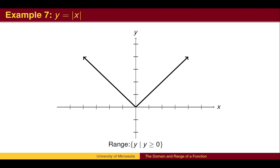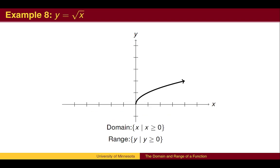Here is another example, the absolute value function. Once again, the graph points upward from the origin, so the range is all y values greater than or equal to 0. The square root graph is an example where both the domain and range are restricted.